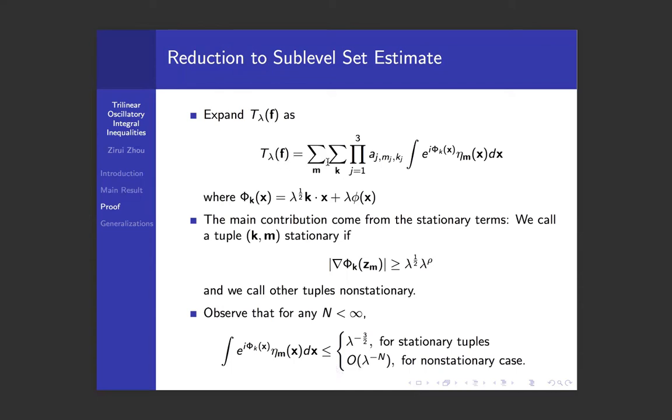Now we can write T_λ(f) as a six-fold sum. Here we're summing over m₁, m₂, m₃, and k₁, k₂, k₃. m denotes the location in the domain and k denotes the frequency in the phase function. We shall also write a new phase function φ_k, which is λ^(½)k·x + λφ(x). For these tuples (m,k), we can divide into the stationary parts and the non-stationary parts. We say a tuple (k,m) is stationary if ∇φ_k evaluated at the center of the cube is less than or equal to constant times λ^(½+ρ). ρ shall be a very small parameter and morally we can think of it as zero for now.